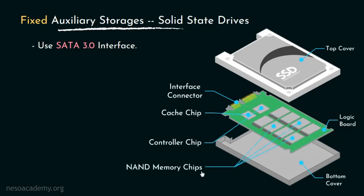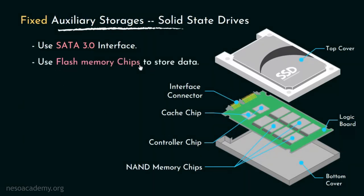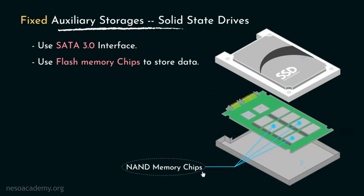Now these are the NAND memory chips and they reside on both sides of the logic board. For data storage, SSDs basically use flash memory chips. Now these NAND memory chips within the SSDs are called CTF memory or charge trap flash memory. Basically, in each cell we can store information by placing different levels of electrons. In earlier days, we could only store either 1 or 0 — that is a single bit within a memory cell — where if the cell was filled with electrons it would represent 0, and a cell with no or few electrons would represent 1. This is why they used to be called single level cells.